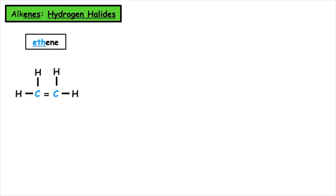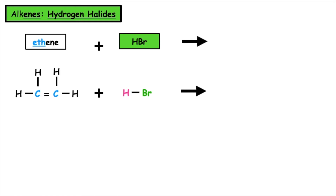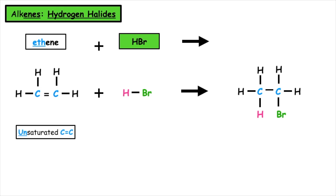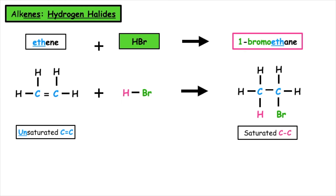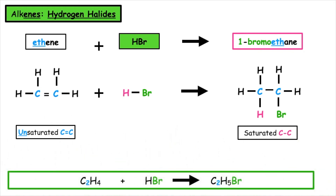Let's have a go at doing the addition of hydrogen halides. This is when we have a hydrogen which is directly bonded to a group 7 element. So if we have ethene and we add on hydrogen bromide, the carbon-to-carbon double bond will break and a hydrogen would add to one carbon and the bromine would add to another. This would give us a molecule known as bromoethane. If we were to write the molecular formula for this, we would have C2H4 plus HBr goes to C2H5Br.